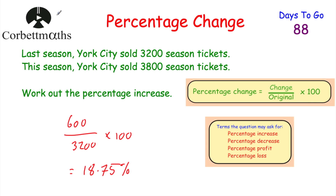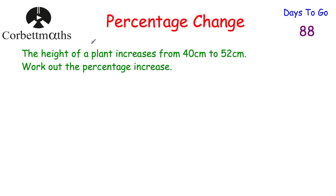Well done if you got that. Now let's look at another one. This is a non-calculator question, so I'm putting down my calculator. The height of a plant increases from 40 centimetres to 52 centimetres. Work out the percentage increase.